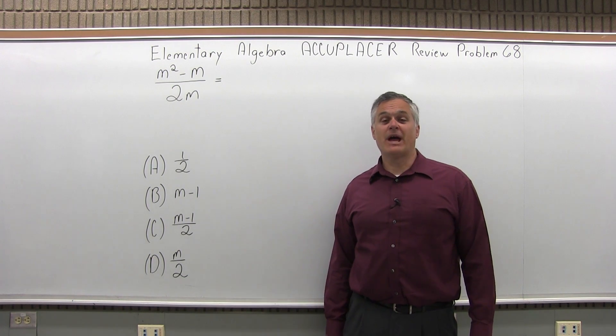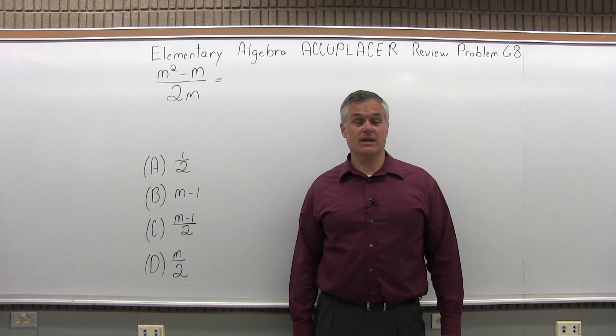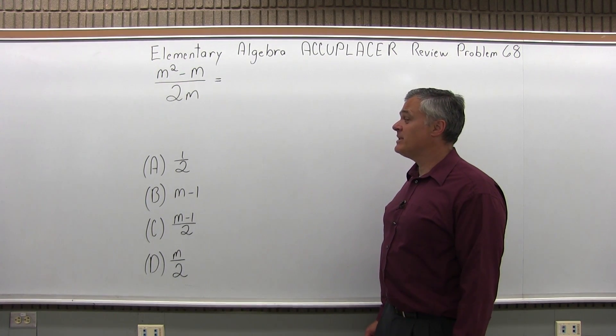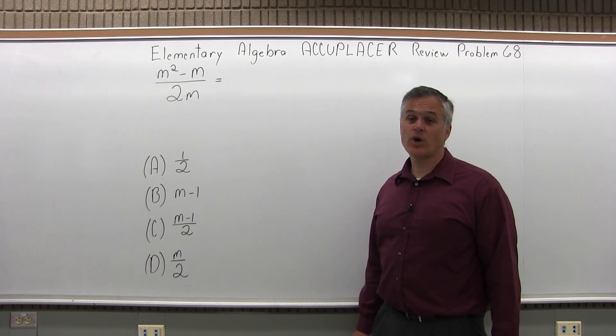This is the Elementary Algebra Accuplacer Review, Problem 68. We have m to the second minus m over 2m equals which one of the four following options?